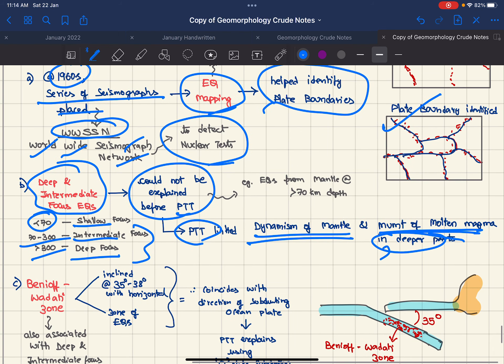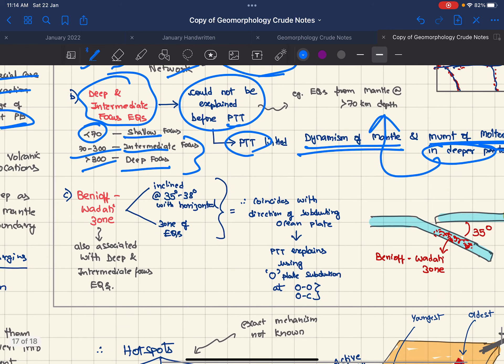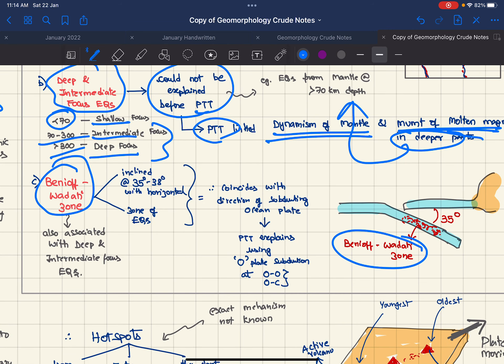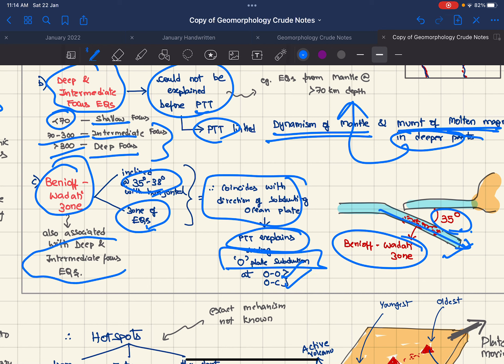Next is Benioff-Wadati zone, which is inclined at 35 to 38 degrees with the horizontal. It is a zone of earthquakes that coincides with the direction of the subducting plate. The angle and depth coincides with the subducting plate. Therefore, PTT can explain this using ocean plate subduction at ocean-ocean and ocean-continent boundaries. This is a zone of deep and intermediate focus earthquakes.